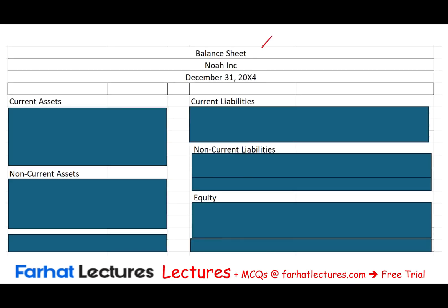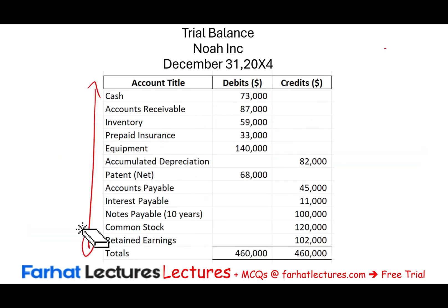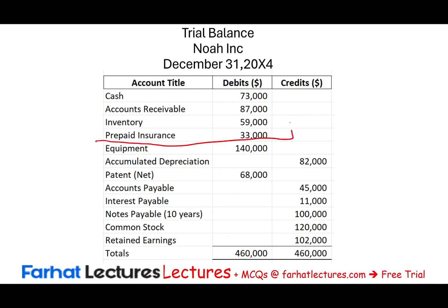This is the balance sheet for NOAA Inc. — the company name and the date. First we are going to list the current assets. Current assets are assets that will be converted to cash, consumed, or received in cash in the next operating cycle, which we assume is one year. Cash is a current asset. Accounts receivable will be converted to cash. Inventory will be converted to cash. Prepaid expenses will be consumed within 12 months. So these four accounts are considered current assets.